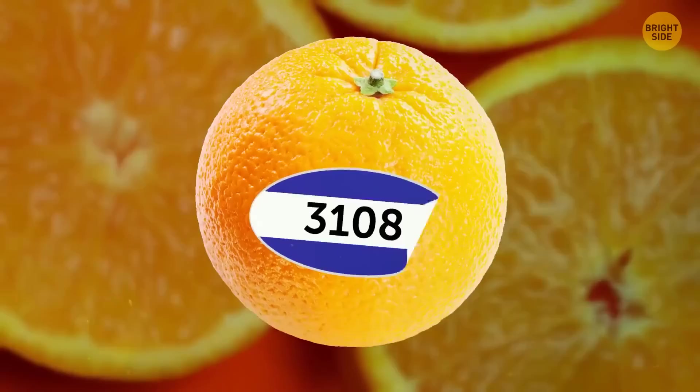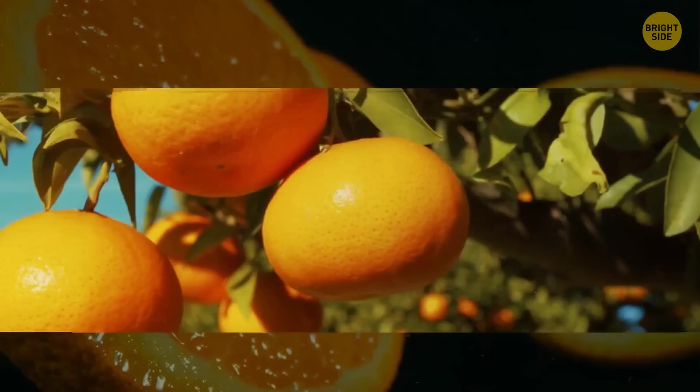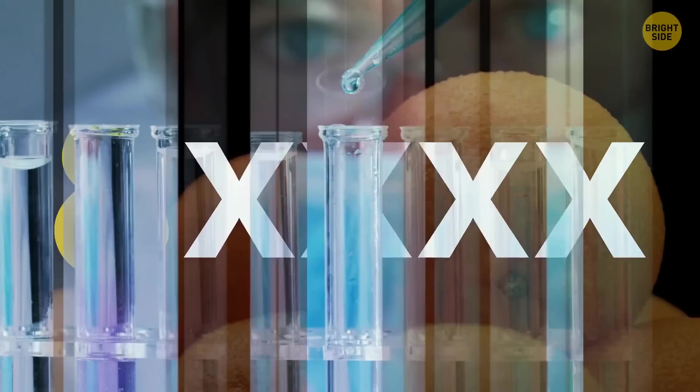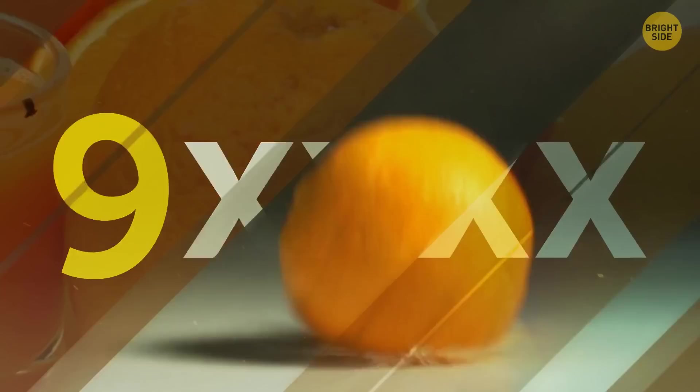Those numbers on stickers they put on oranges aren't random. If there are four digits and the first is three or four, this means the fruit has been made with conventional farming techniques. Five numbers beginning with an eight means the fruit has been genetically modified. Five numbers beginning with a nine means the fruit is organic.